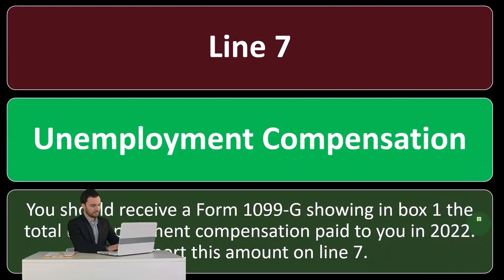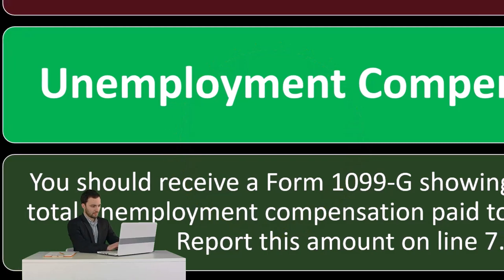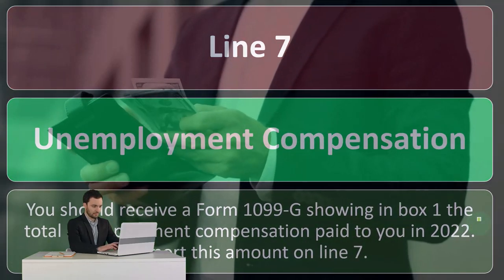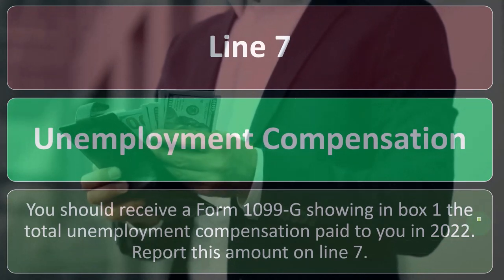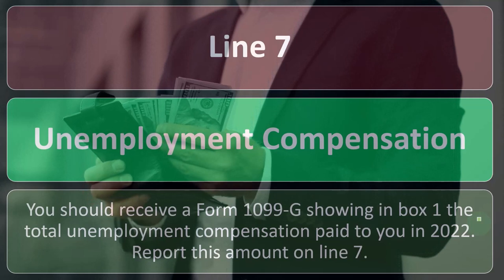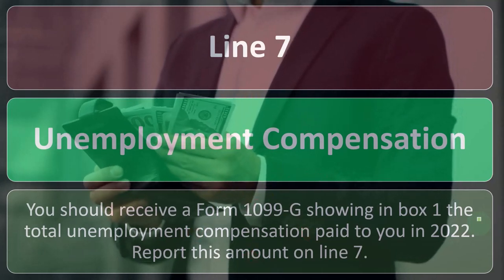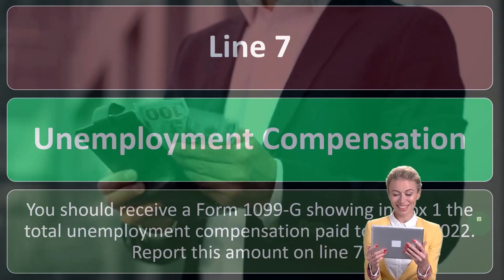The other issue is if they received a significant amount of unemployment compensation, oftentimes they didn't withhold on it. When you're a W-2 employee you fill out a W-4 form so the employer acts as the tax collector, taking your money before it touches your pocket and giving it to the IRS directly. Unemployment isn't required to do withholding — you can request it, but most people don't. So a significant amount of unemployment can cause underpayment of taxes.